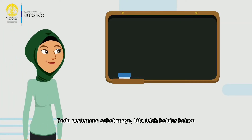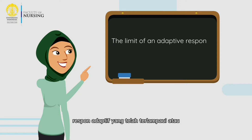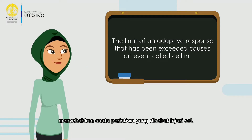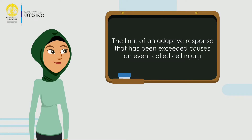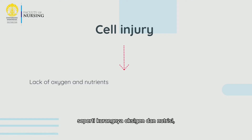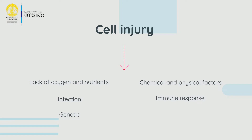In the previous meetings, we have already learned that the limit of an adaptive response that has been exceeded, or a state in which adaptation is not possible, causes an event called cell injury. Cell injury can occur due to various factors such as lack of oxygen and nutrients, chemical and physical factors, infections, immune response, and genetics. We will discuss these one by one.